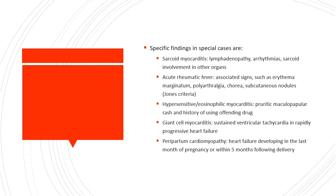Certain clinical findings are specific to special cases. If a patient has myocarditis secondary to sarcoidosis, they will have lymphadenopathy, arrhythmias, or involvement in other organs. Patients with acute rheumatic fever will have other signs per Jones criteria such as erythema marginatum, polyarthralgia, chorea, or subcutaneous nodules. Patients with hypersensitivity eosinophilic myocarditis have a pruritic maculopapular rash and a history of using an offending drug.